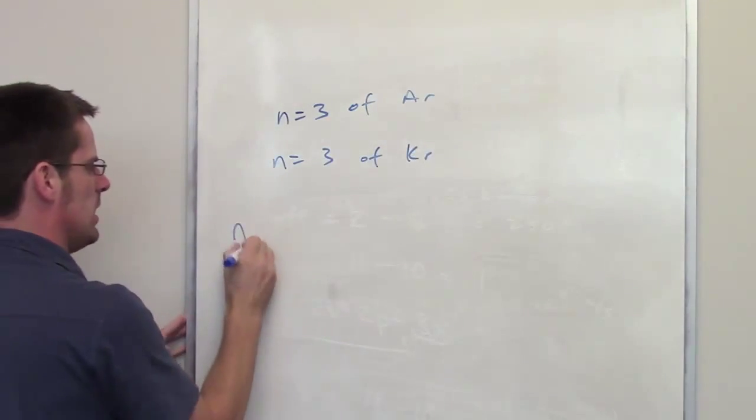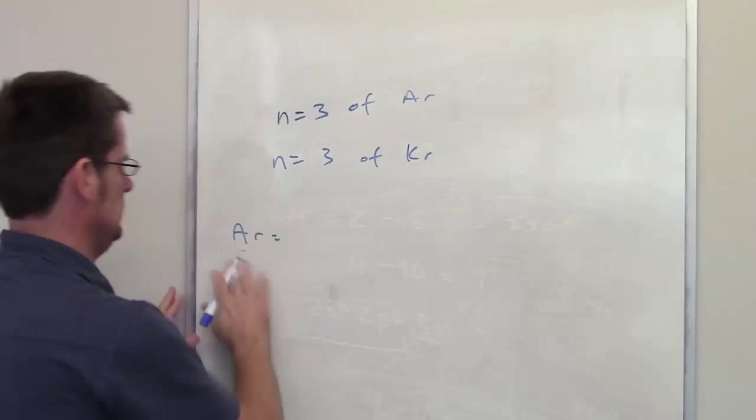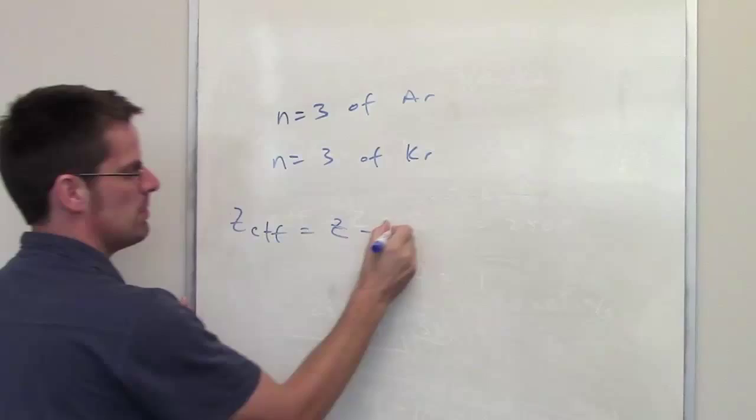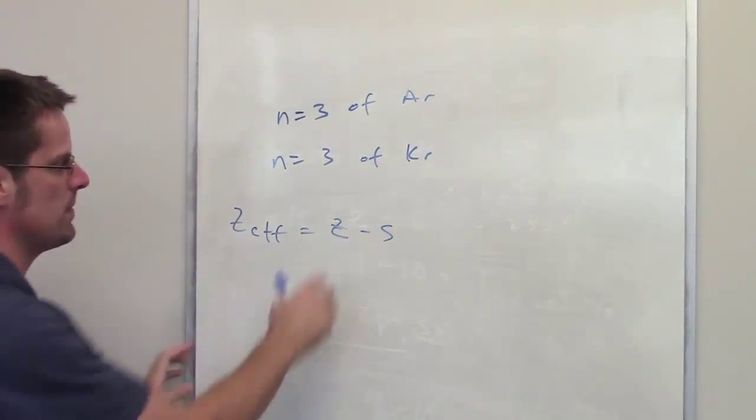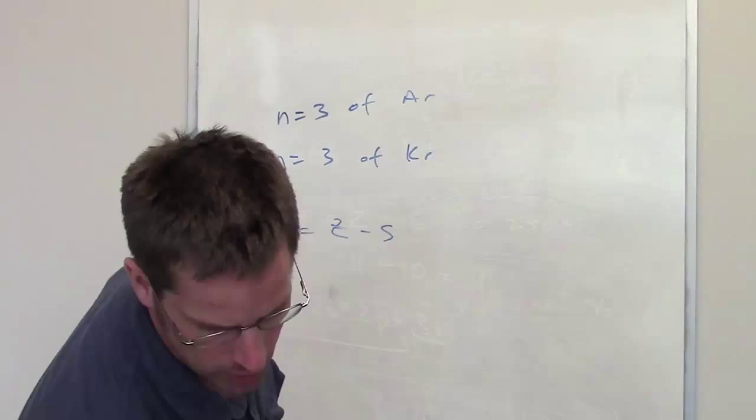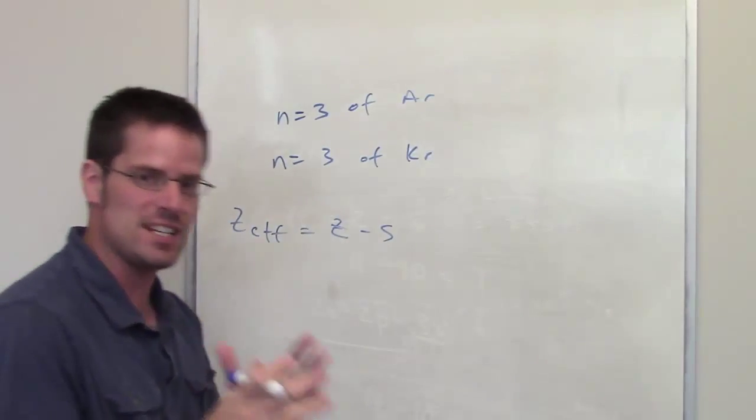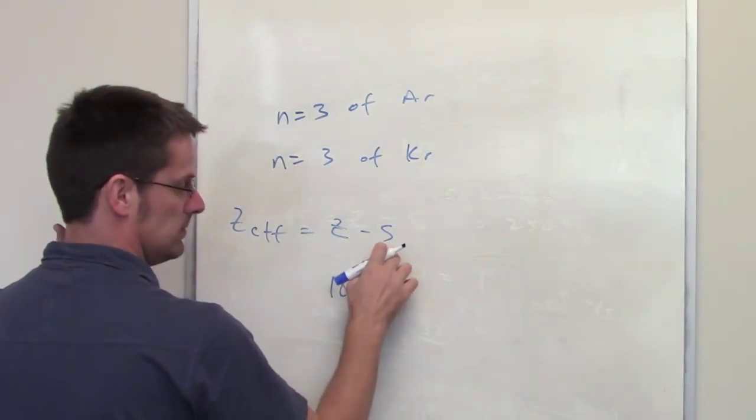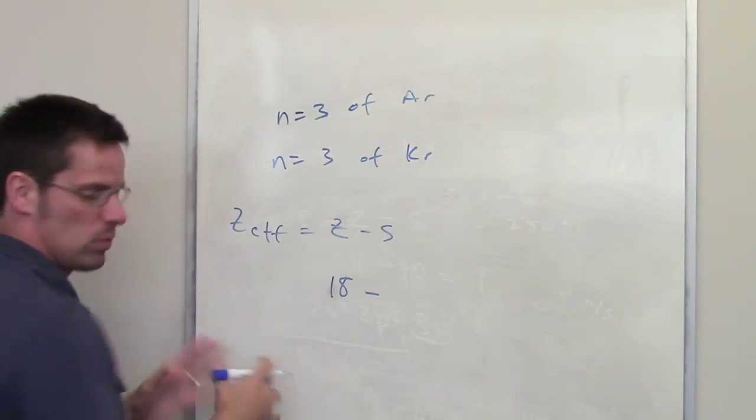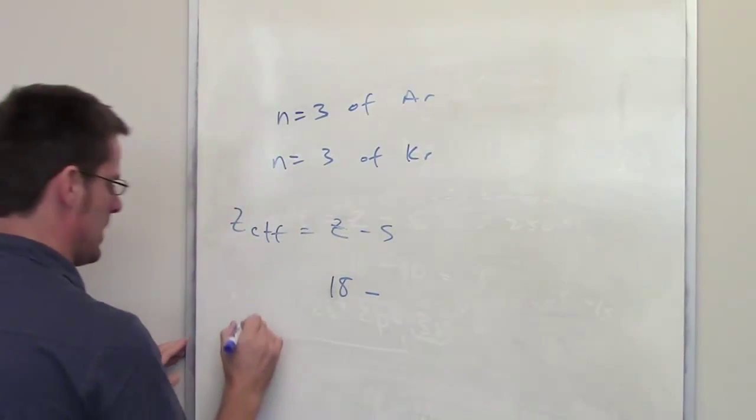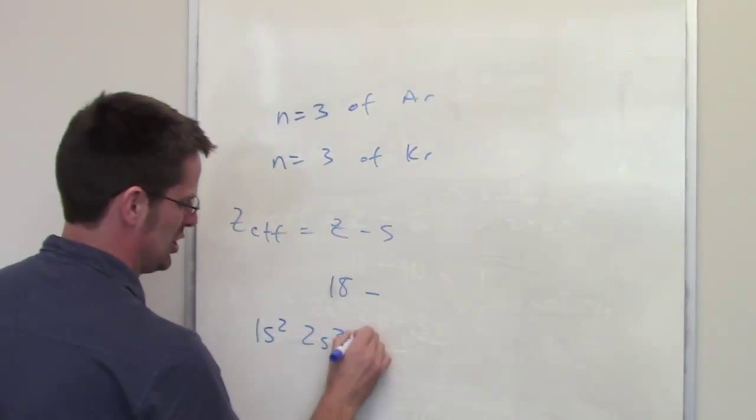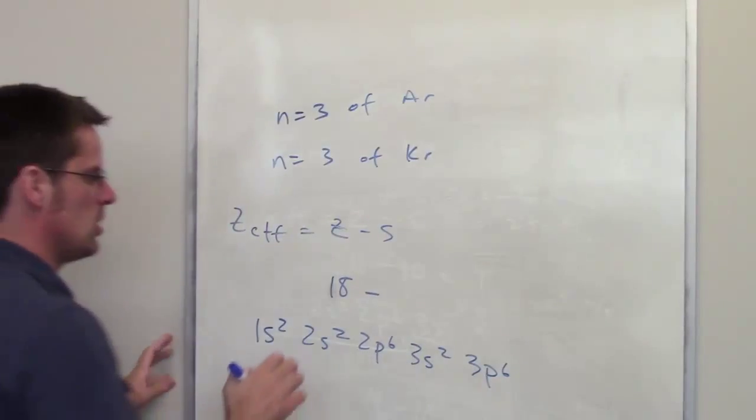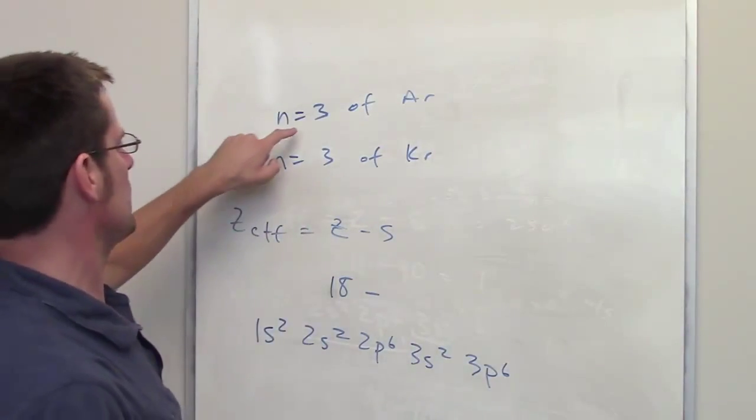Let's look at argon. Argon Z-effective is of course going to be equal to Z, which is its atomic number, minus S, which is the screening constant for the electron in question. Its atomic number for argon is 18, which means it has 18 protons in its nucleus. Then the screening constant we have to figure out by writing out the electron configuration, so argon is 1s2 2s2 2p6 3s2 3p6.